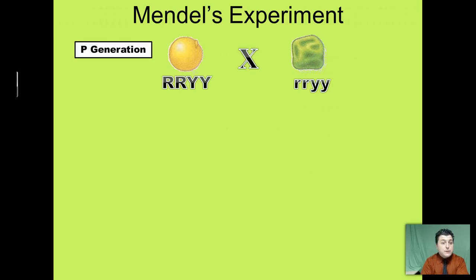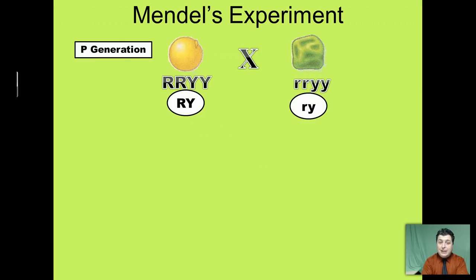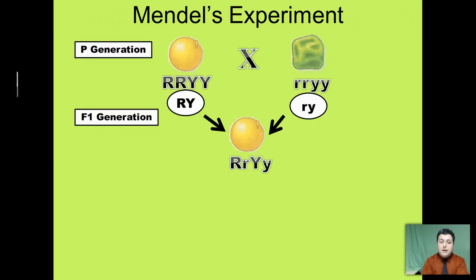He allowed these to cross-pollinate to create hybrids. When parents pass on their traits to their offspring, they give exactly one half of their genetic makeup. So one half of the round and yellow parent is going to be one round allele and one yellow allele, while one half of the green and wrinkled parent is a green allele and a wrinkled allele. In the F1 — the first filial generation — every single offspring is round and yellow, which makes sense because of Mendel's principle of dominance. The yellow and round traits dominate and mask the green and wrinkled.